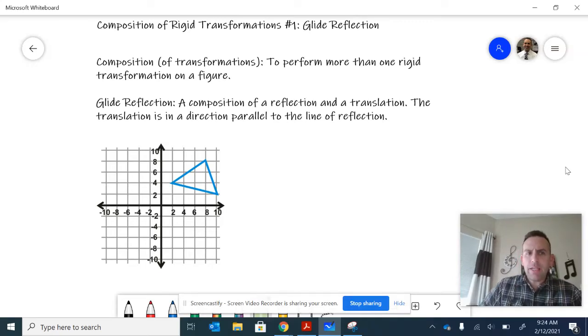In this video we will begin to look at the composition of rigid transformations. As you can see in the definition, a composition of transformations is to perform more than one transformation on the same figure.